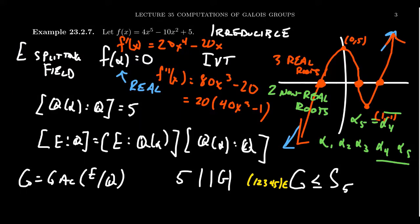Using complex conjugation, that's an automorphism of the complex numbers which restricts down to an automorphism on our splitting field e. Complex conjugation will send alpha four to alpha five and vice versa, but alpha one, alpha two, alpha three are real numbers, so complex conjugation will do nothing to them. Complex conjugation gives us this map alpha four alpha five inside the Galois group.